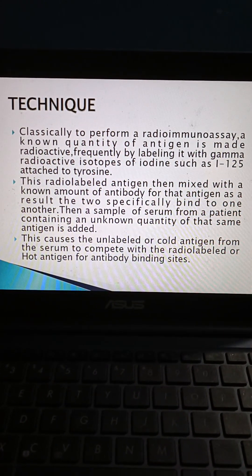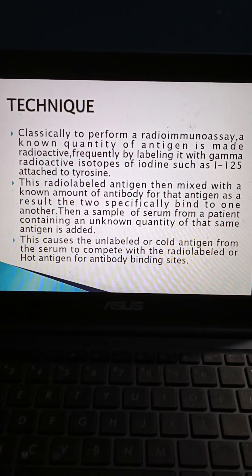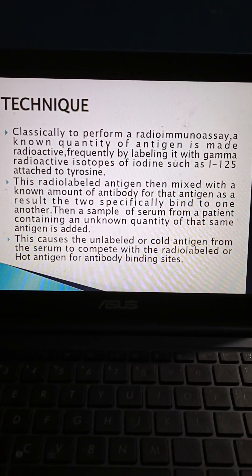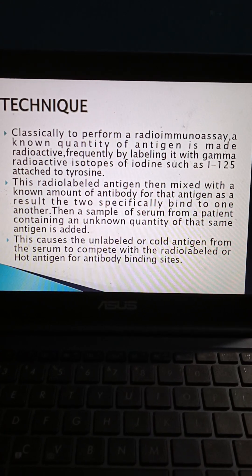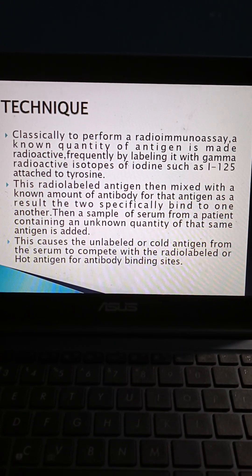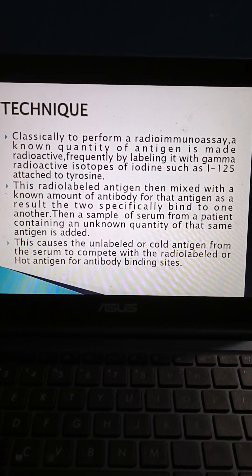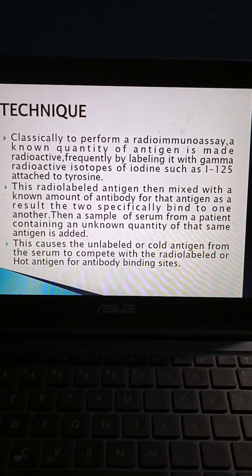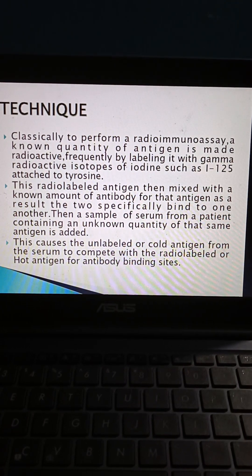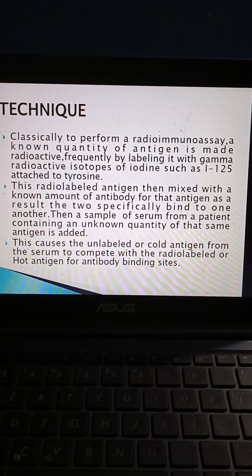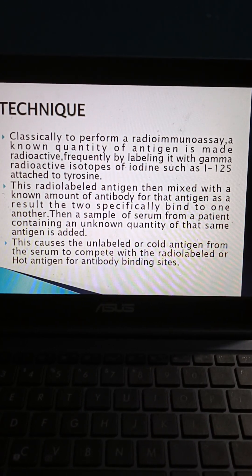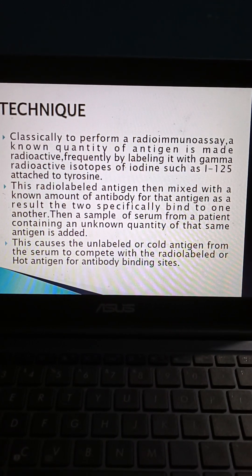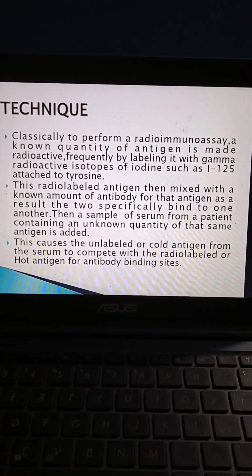Coming to technique, classically, to perform a radioimmunoassay, a known quantity of antigen is made radioactive, frequently by labelling it with gamma radioisotopes of iodine such as I-125, attached to tyrosine. This radiolabelled antigen is then mixed with a known amount of antibody for that antigen, and as a result the two specifically bind to one another. Then a sample of serum from a patient containing an unknown quantity of that same antigen is added. This causes the unlabelled or cold antigen from the serum to compete with the radiolabelled or hot antigen for antibody binding sites.